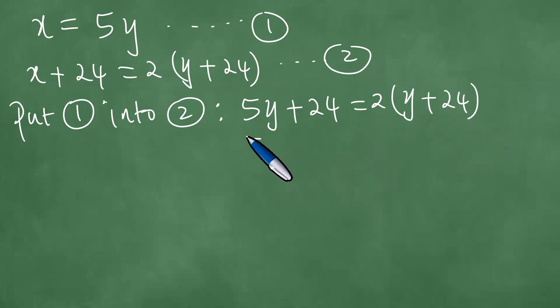Let's distribute this side here. So we have exactly five y plus 24 by distribution equals twice y plus 48. So five y minus two y is three y equals 48 minus 24, which is 24 divided by two. So y equals exactly eight.